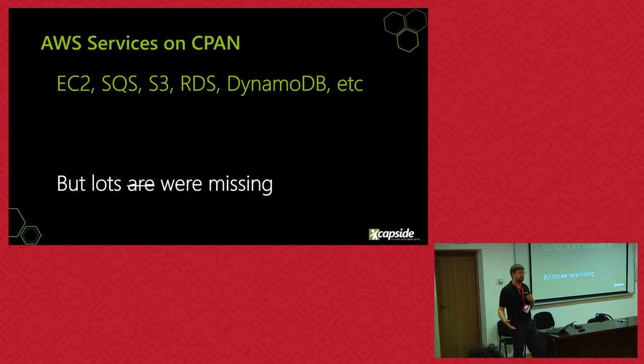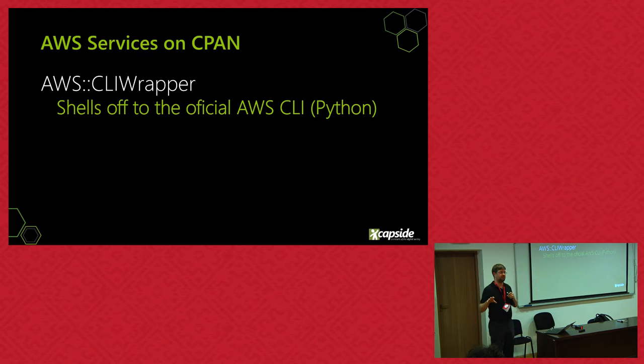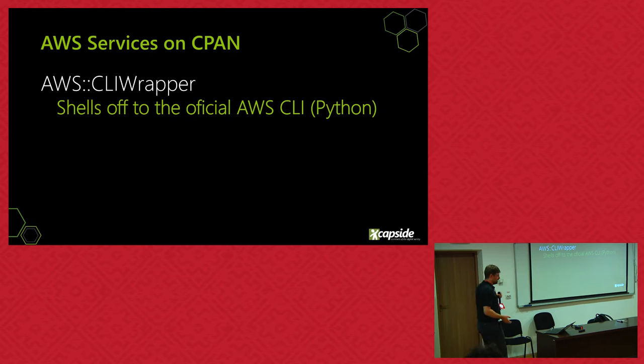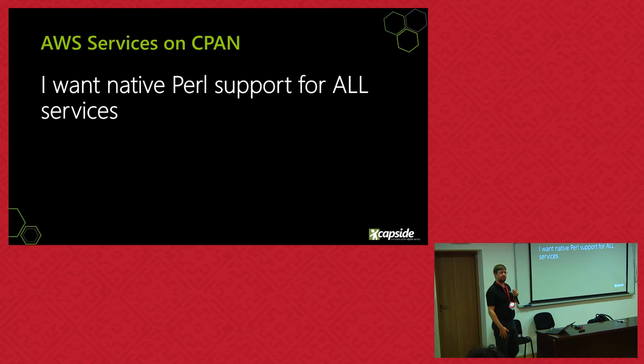Since we at Capsi are heavy AWS users, we wanted support for all services. There is a very special module called AWS CLI Wrapper — very intelligent — that just shells off to the Python CLI. It supports all services, but it is kind of slow. So I really want Perl to have native support for all types of services.